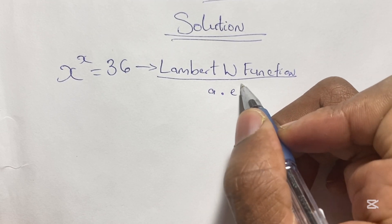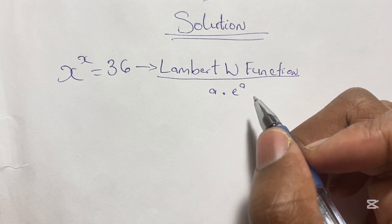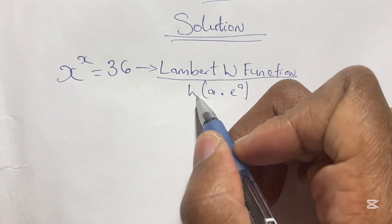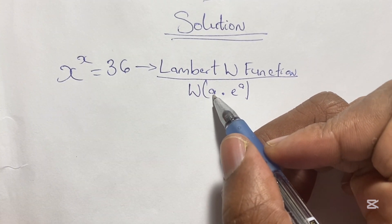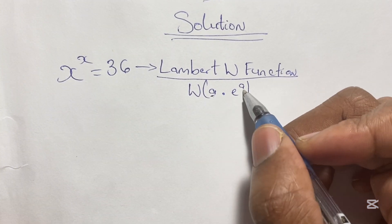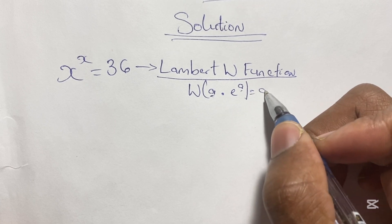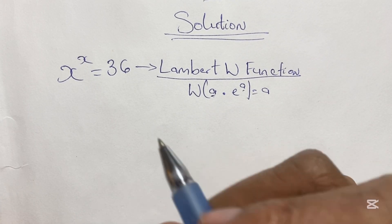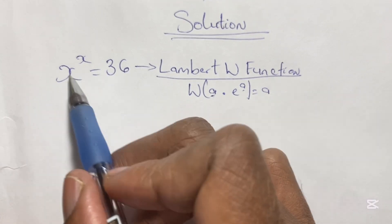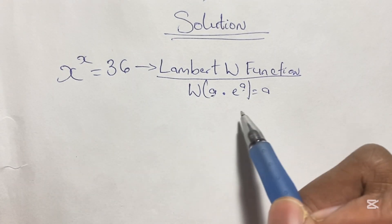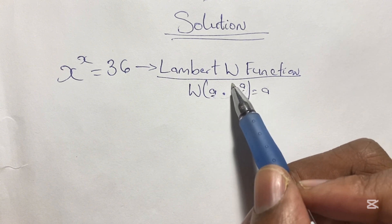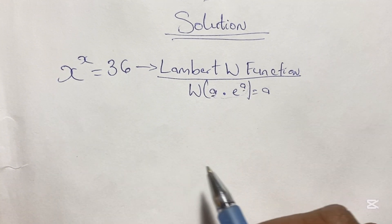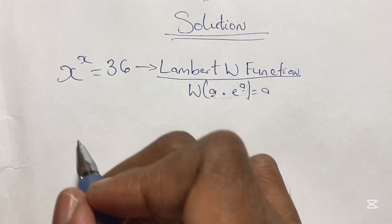How this works is that if we have an expression such as a times e to the power of a — where you see a in the base and also in the power — if you apply a W function to this expression, the result is just a. So what this means is that we are going to take this equation and write it in the form of a times e to the power of a.